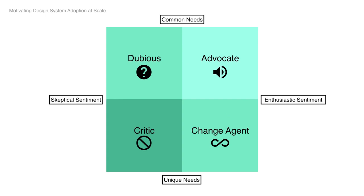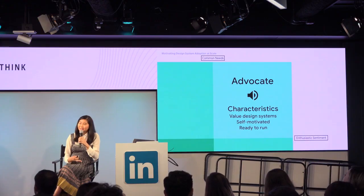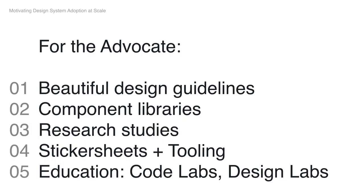Instead of that blob of everyone you're stressed about covering, we can map out our audience according to four segments. Let's start with the advocate — upper right, the intersection of common needs plus enthusiastic sentiment. Some characteristics: they're self-motivated, they already know the value of design systems, they could be an early adopter, they're generally part of a well-balanced team with a good ratio of designers to engineers, and they're ready to capitalize on all the improvements a design system can bring. They take your work and run with it. I approach them with relief and mutual enthusiasm.